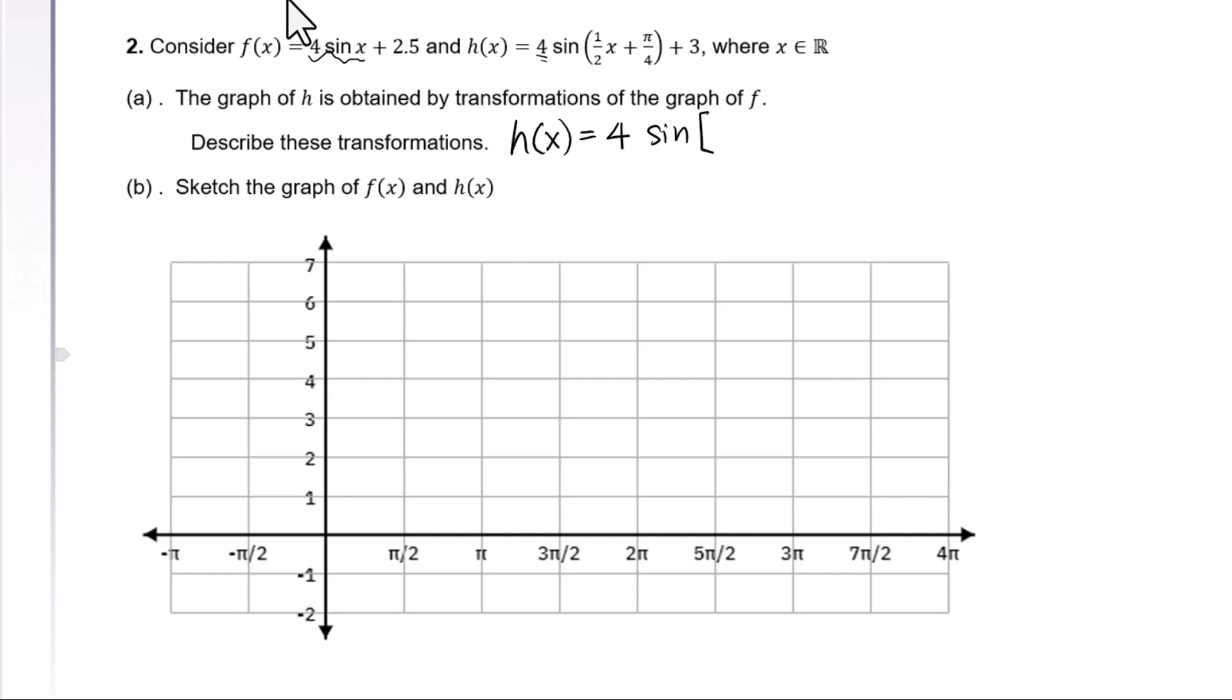Remember, we need to change this function into transformational form. Take out 1/2: [x + (π/4)]/(1/2). We can reduce 2 and 4 because both are denominators. Take out 1/2: x + π/2 + 2.5 + 0.5.